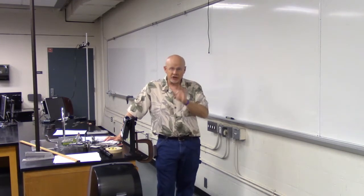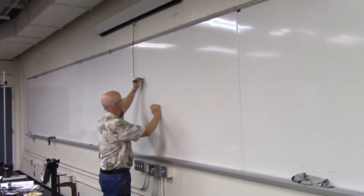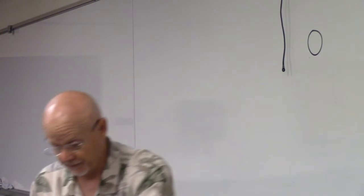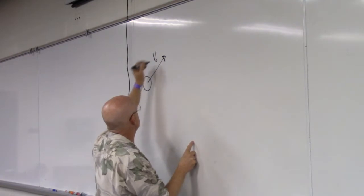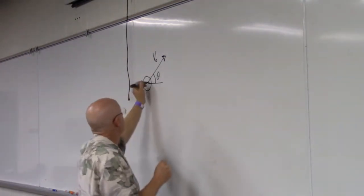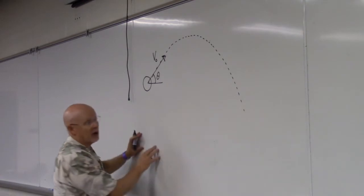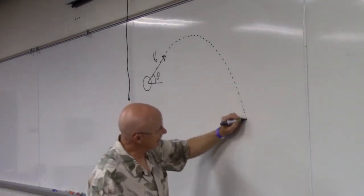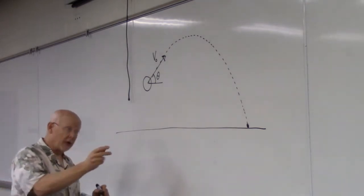Let's talk about projectile motion in review. Let's say I have an object — a little round object. For our lab, we're going to shoot this little yellow ball across the room. This will be my starting point. The ball will get launched up at some initial velocity and some angle theta, go across the room, and since we're shooting from up on a table, it's going to land on the lab floor, which is lower than where it starts.